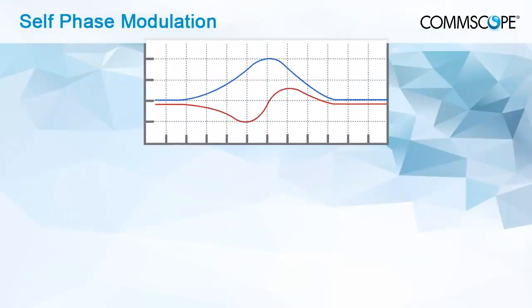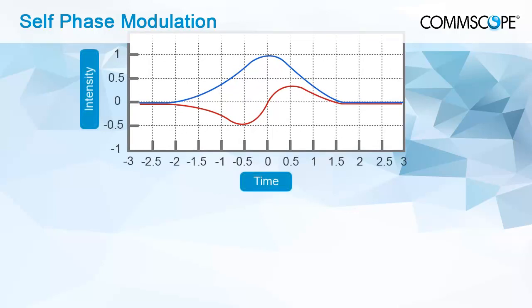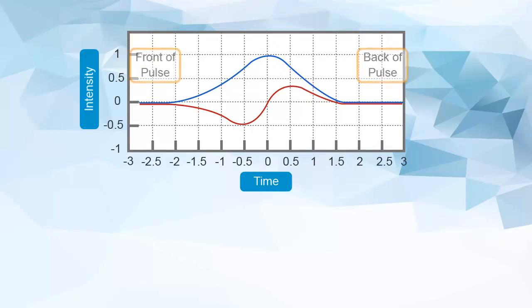Self-phase modulation (SPM) is the effect that a signal has on its own phase, resulting in signal spreading. With high signal intensities, the light itself induces local variable changes in the refractive index of the fiber, known as the Kerr effect. This phenomenon produces a time-varying phase in the same channel.